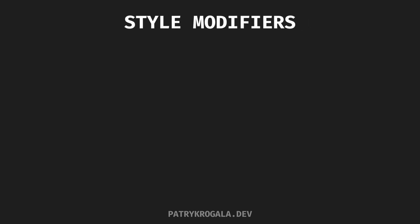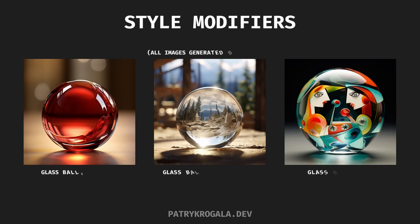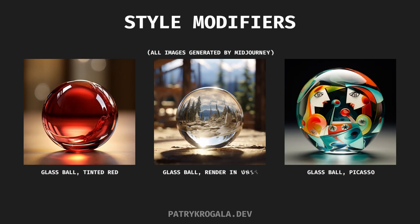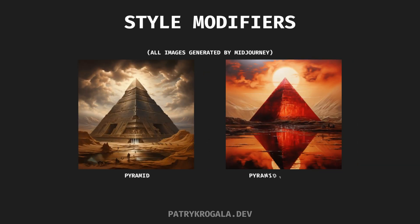Here's where the magic happens: style modifiers. These are descriptors that spice up your results — think of them like Instagram filters for AI. Want your image tinted red or rendered in unity? Just ask the AI. Look at this: two sets of pyramids, one simple and the other a red, glassy marvel thanks to the power of style modifiers.